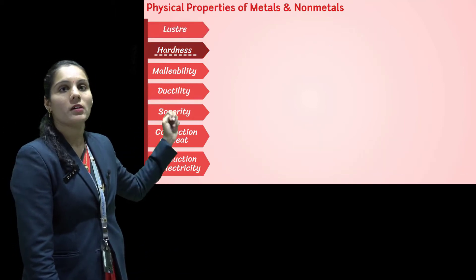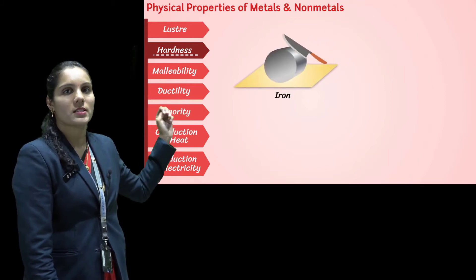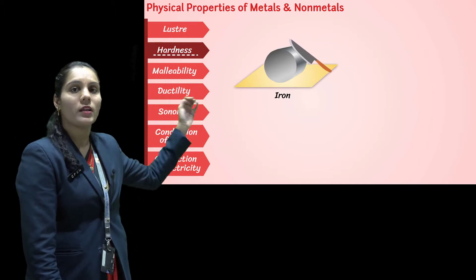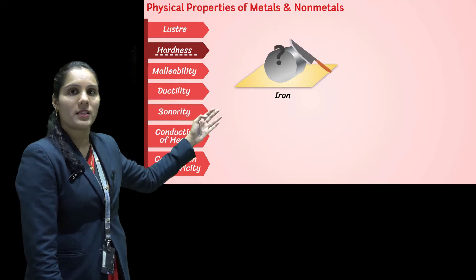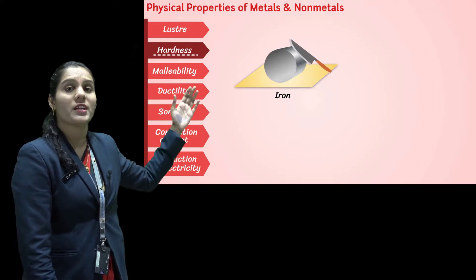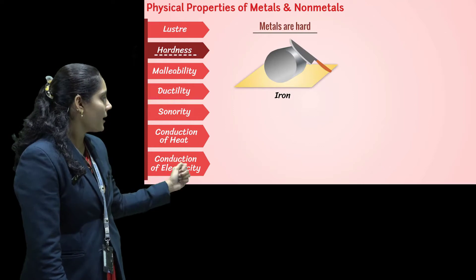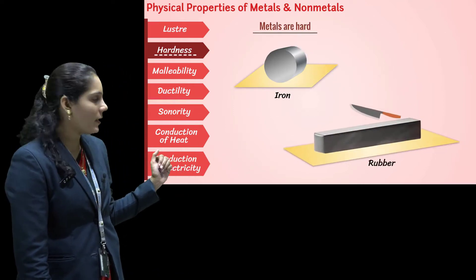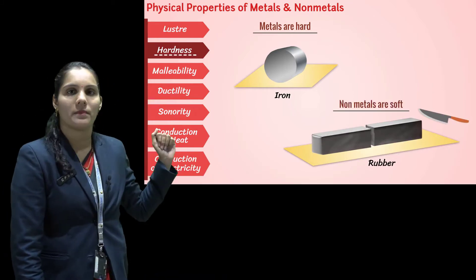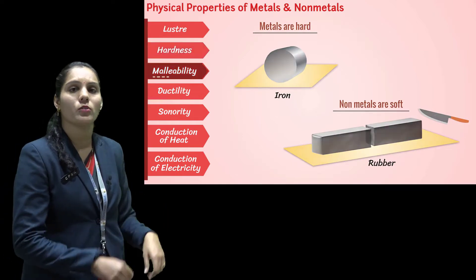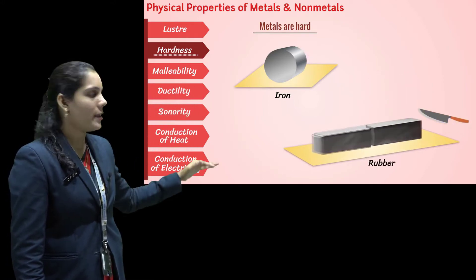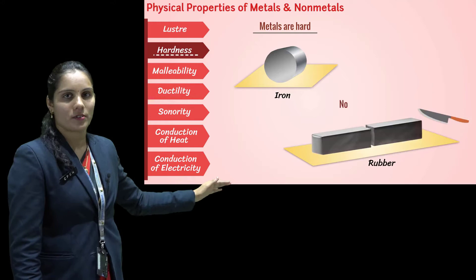The second property of metals and non-metals is hardness. If I try to cut an iron piece with a knife, I am not able to cut it easily. Why? Because iron metal is very hard. For non-metals, if I try to cut them, I can easily cut them with a knife. For example, chalk — we can easily break chalk into small pieces. So metals are hard in nature and non-metals are soft in nature.